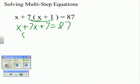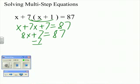Next, add 7x to x. So now the equation is 8x plus 7 equals 87. Subtract 7 from both sides of the equation.